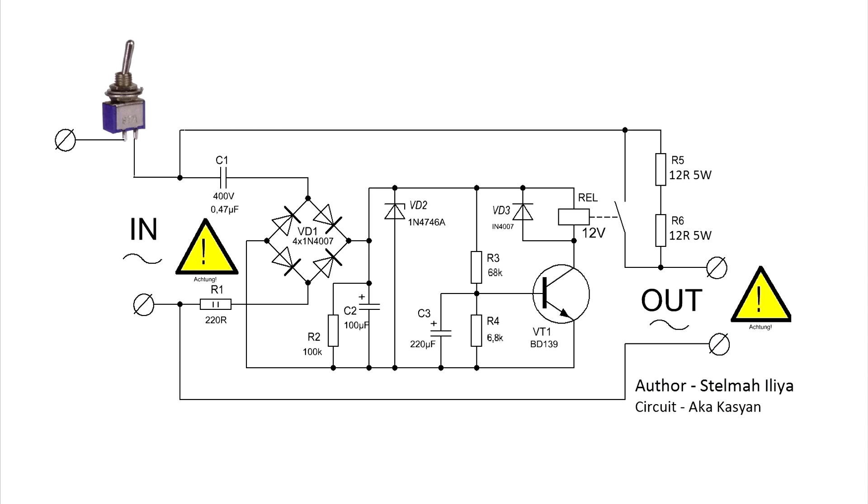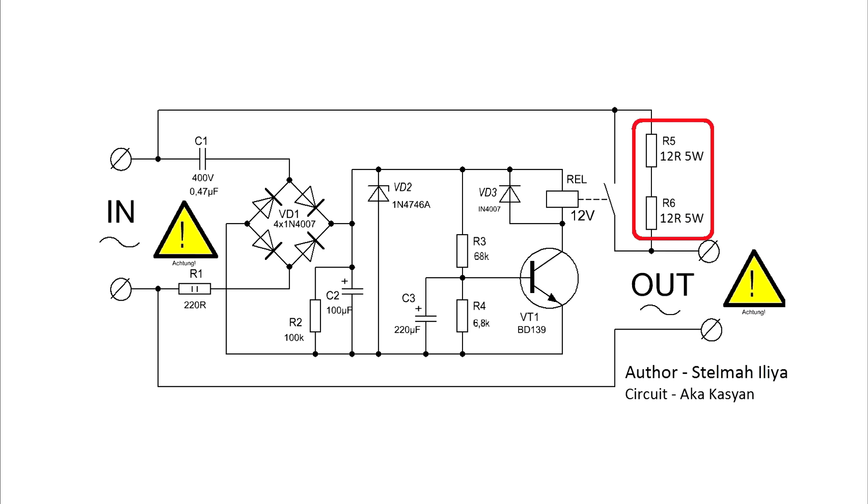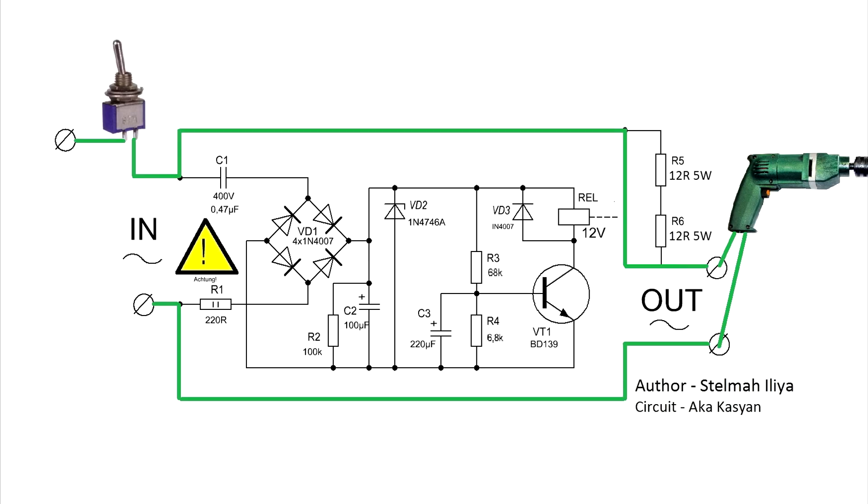When the switch is turned on, the mains current through the powerful current limiting resistors is applied to the load, for example, an electric drill. These resistors limit the current and the drill starts smoothly without jerking. After a while,